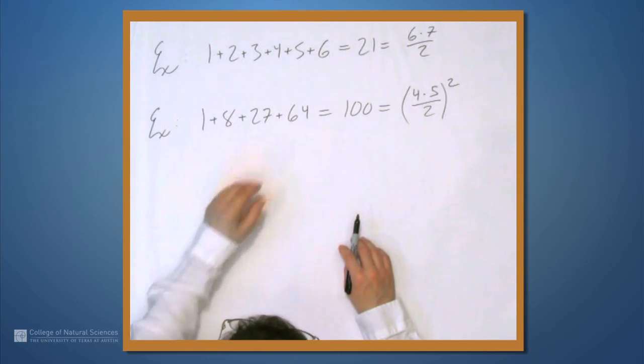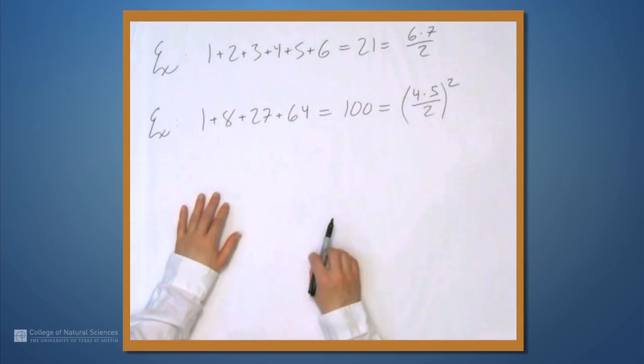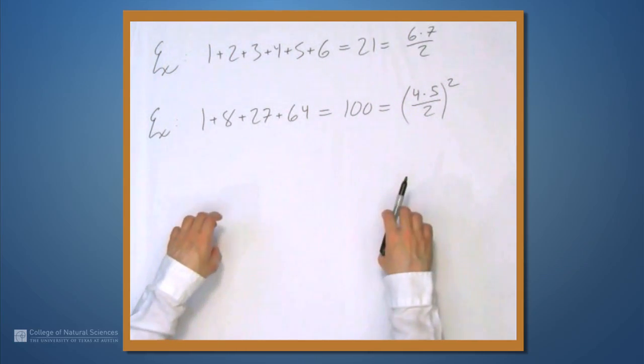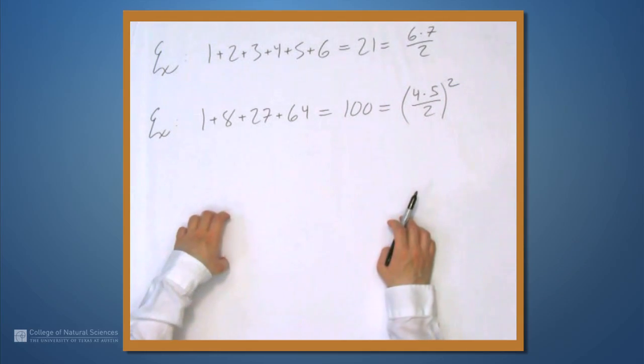So these formulas are going to come in handy when you're computing Riemann sums and you have the limit of a summation, and you want to turn the summation into something that you can write with an explicit formula without a sigma.